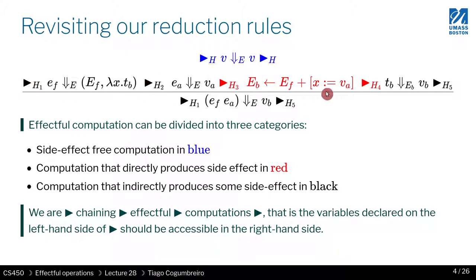The way we will observe the effects of each operation is by providing the initial heap to the first evaluation, and that produces as an output a new heap which is then threaded or passed to the second evaluation.